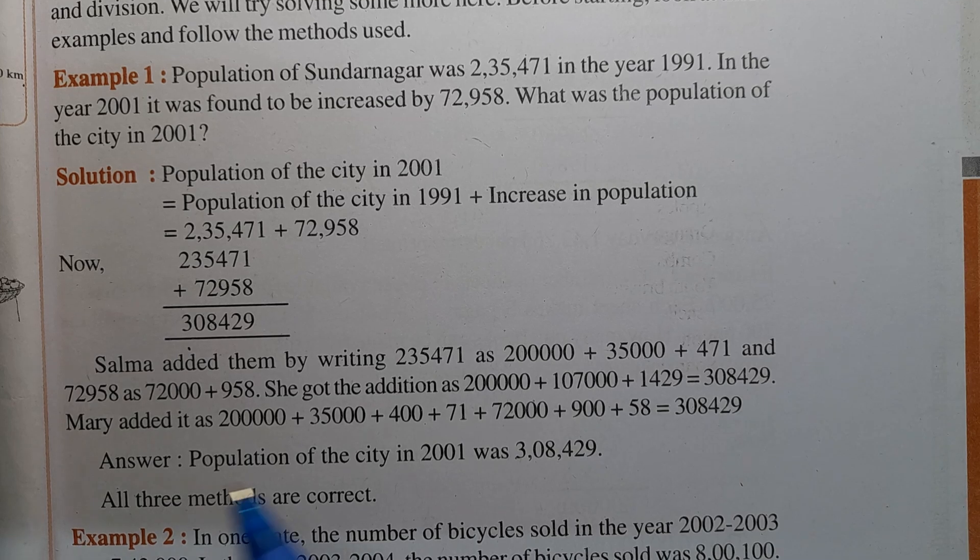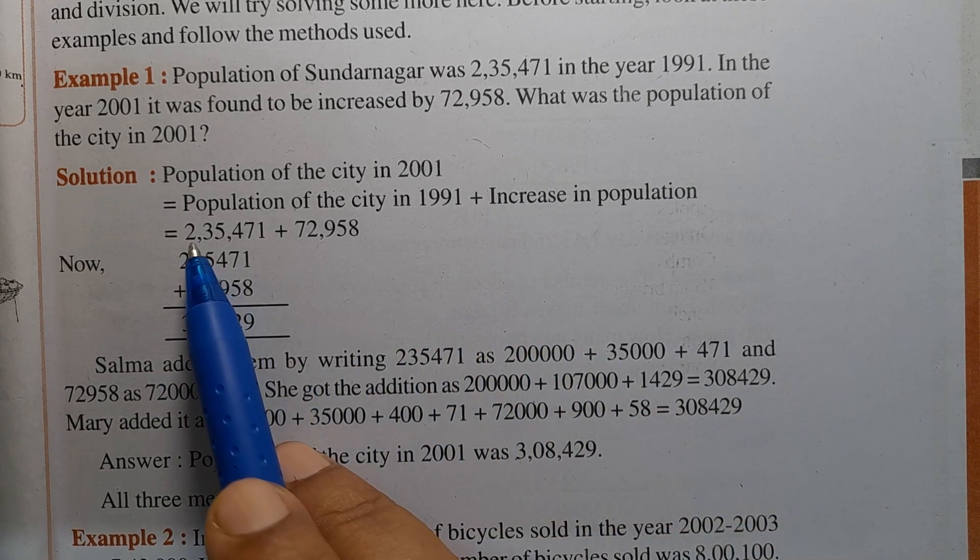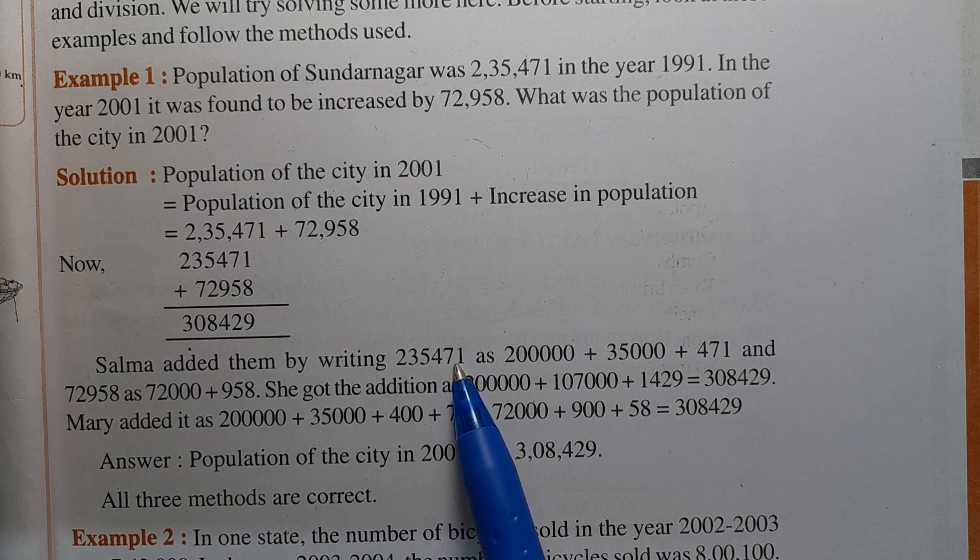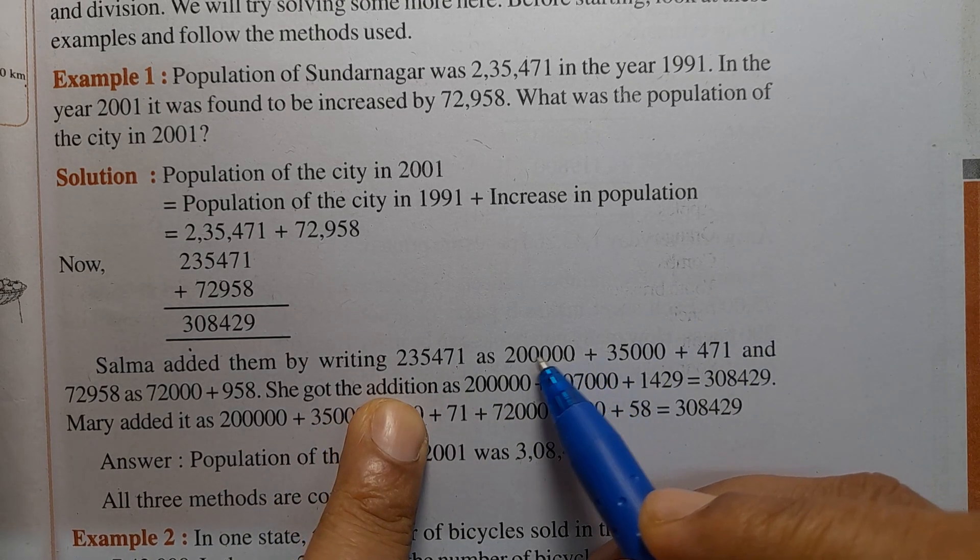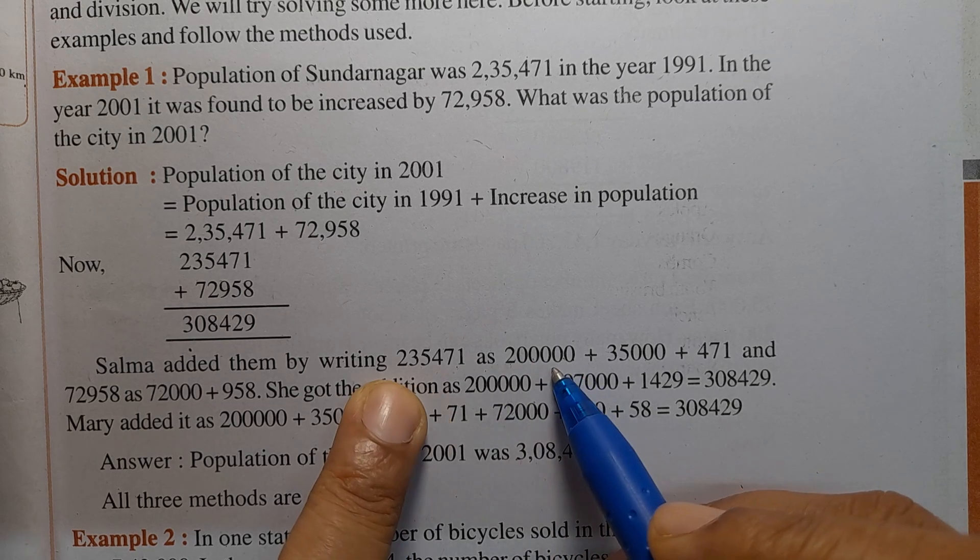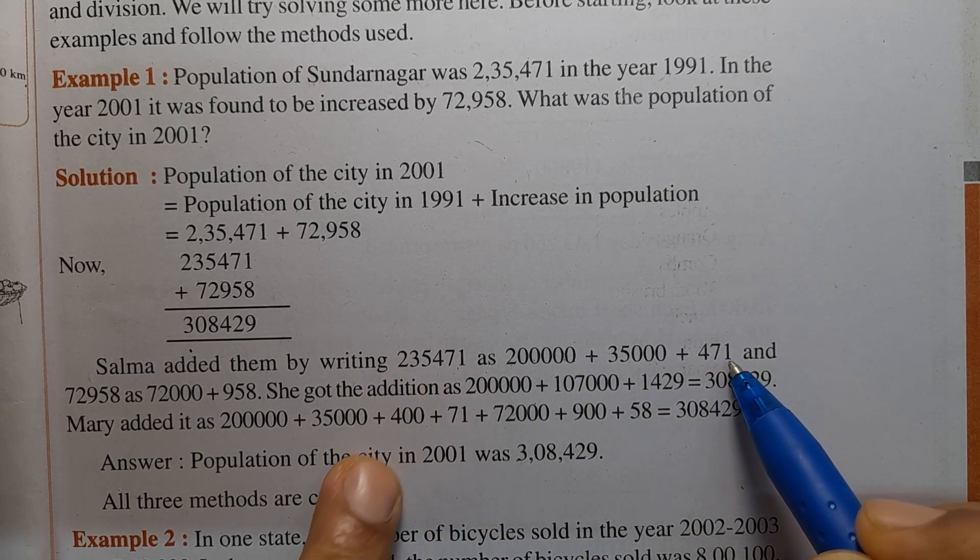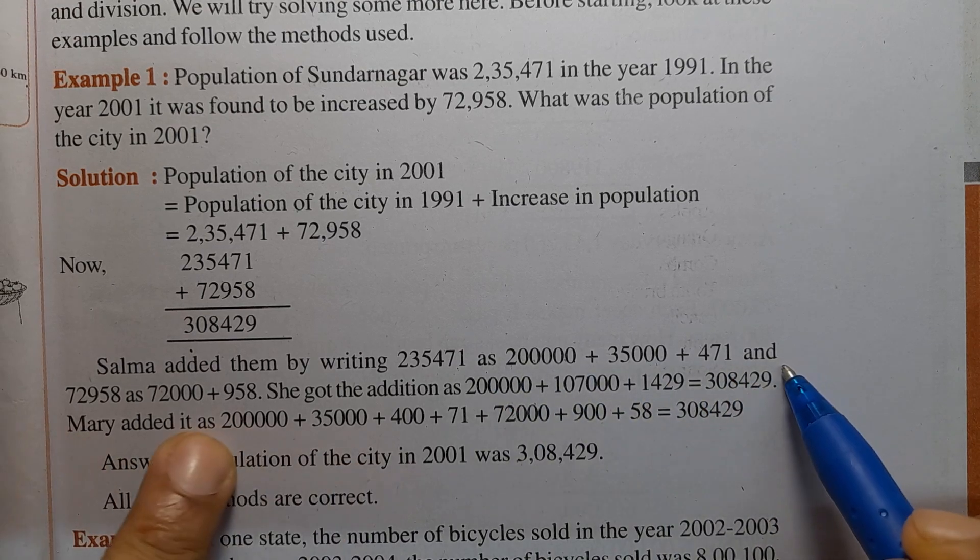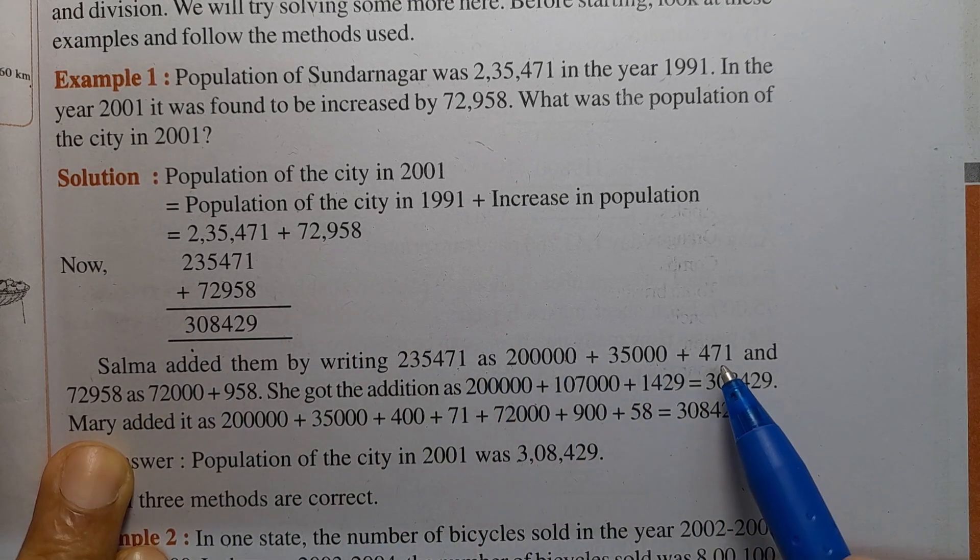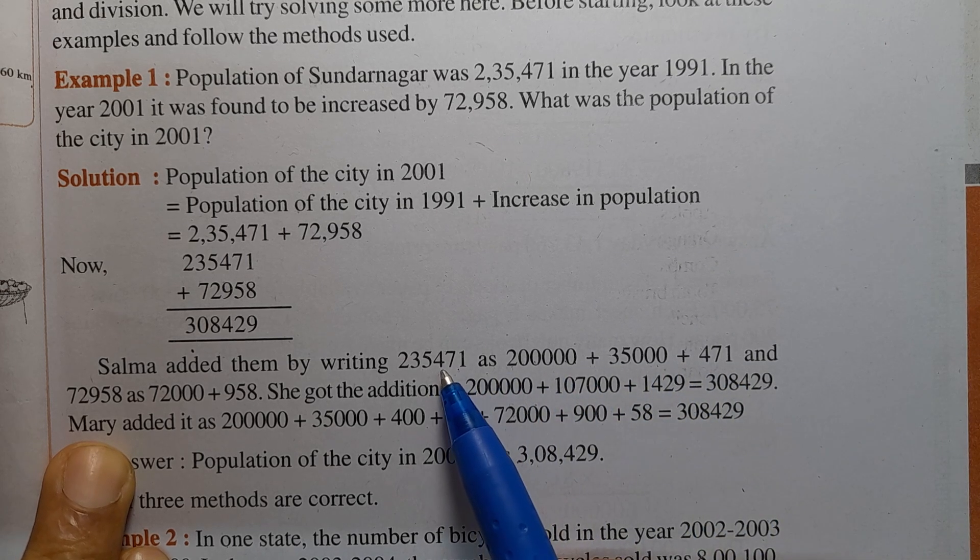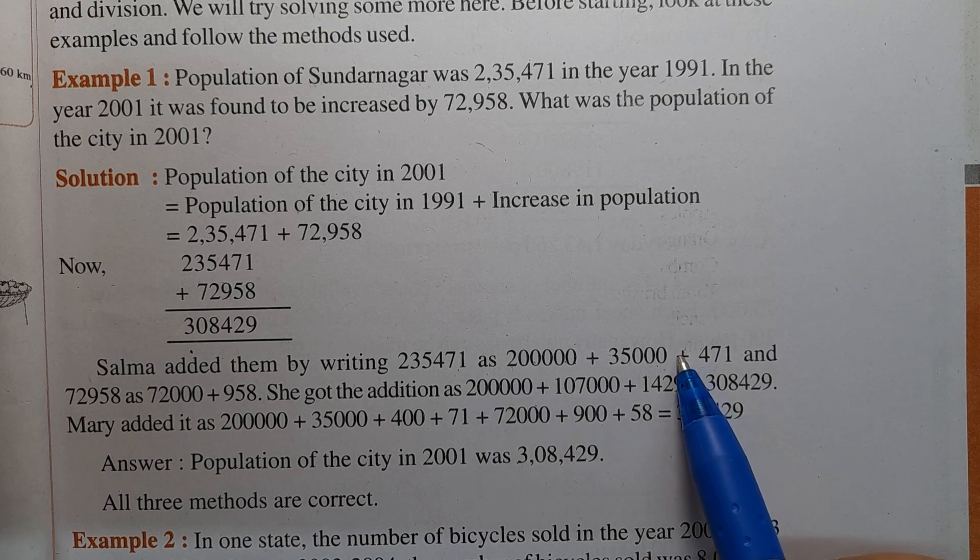Salma added them by writing 2,35,471 as 2,00,000 plus 35,000 plus 400 plus 71.